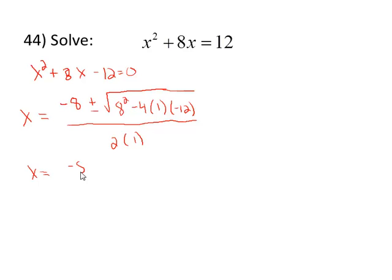We'll simplify the radicand first, and the denominator second. 8² is 64. This product turns into a plus 48, so that's going to be 112, all divided by 2.